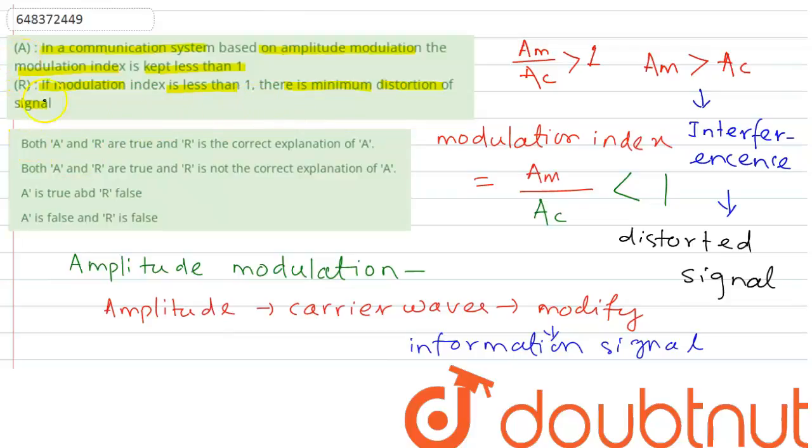So both A and R are true. R is correct explanation of A. Thank you.